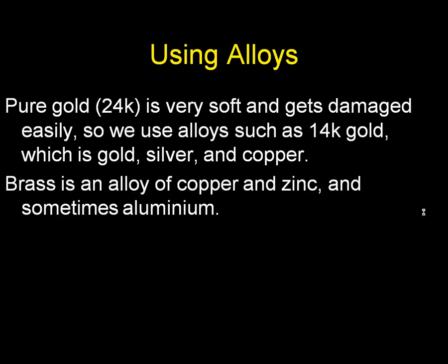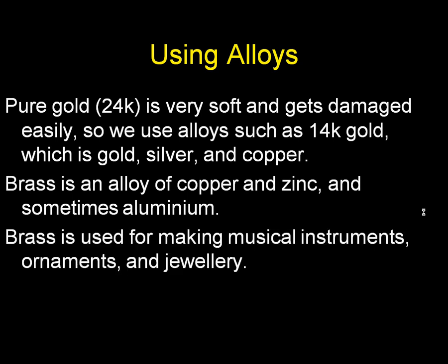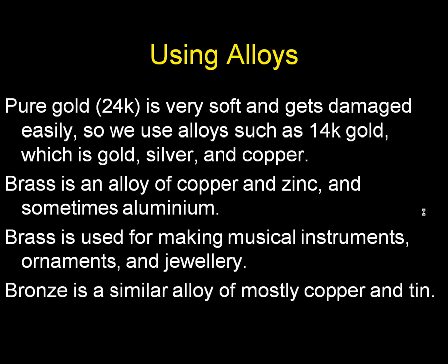Brass is also an alloy — it's copper and zinc, sometimes aluminum. It's used for making musical instruments, especially the ones we call brass instruments, as well as ornaments and less expensive jewelry. Bronze is a similar alloy made of mostly copper and tin. And that's the end of section 1.2.